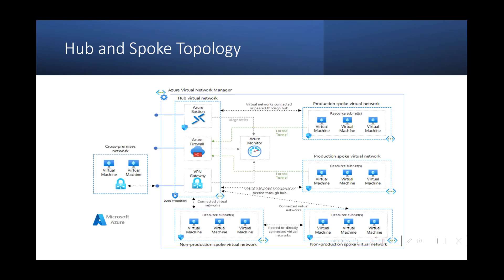Looking at the next page, this shows a diagram from Microsoft documentation. They have a Hub Virtual Network that is paired or connected to other networks like Production and Development Virtual Networks. It is also connected to an on-premises network via VPN gateway. This Hub Virtual Network is acting as the Hub or Central Network, and all the other connected networks are acting as Spokes. These Spokes don't have direct connectivity or pairing between them — traffic going from Spoke 1 to Spoke 2, or Spoke 3 to Spoke 4, goes via the Hub Virtual Network.